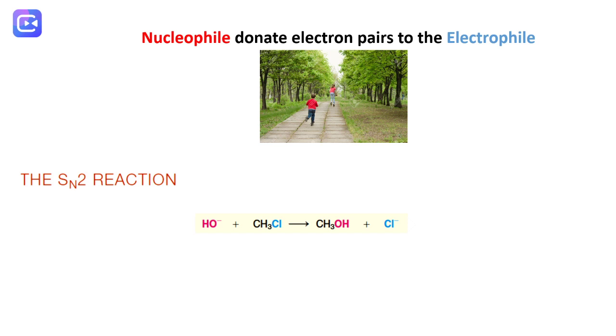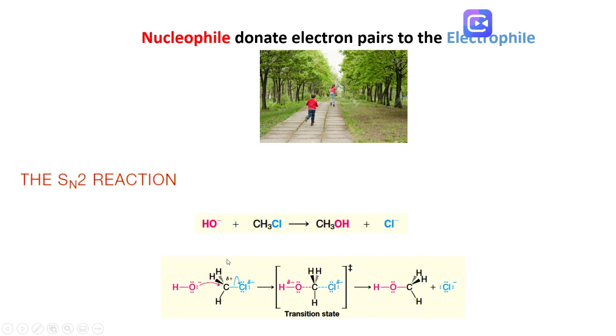The first example is the SN2 reaction. Here the nucleophile is hydroxide ion, which comes from sodium hydroxide or potassium hydroxide, reacting with chloromethyl. The hydroxide will attack this electrophile to produce methanol and chlorine ion.